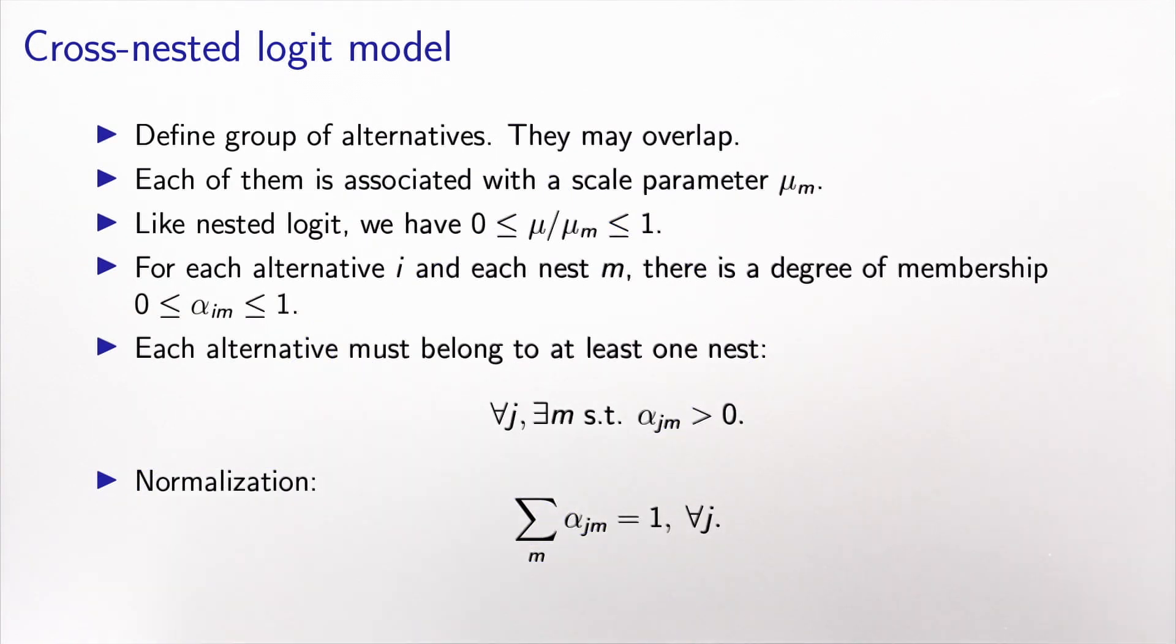So how does it work? First, as we did for the nested logit model, we defined groups of alternatives. And in this case, they may overlap, as we have seen in the example. So one alternative may belong to several groups or several nests. Like for the nested logit model, we associate a scale parameter with each nest. Again, like the nested logit, the ratio between mu and mu_m must be between 0 and 1.